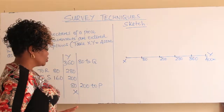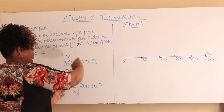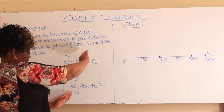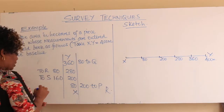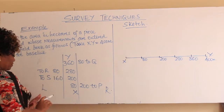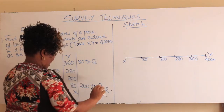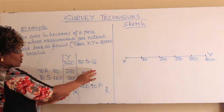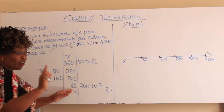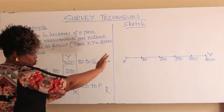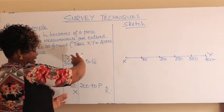We have drawn our baseline horizontally. If you draw the baseline horizontally like that from X to Y, then whatever is to the right we call offsets. The offsets to the right will go below the baseline. If you turn it clockwise, these will go below the baseline.